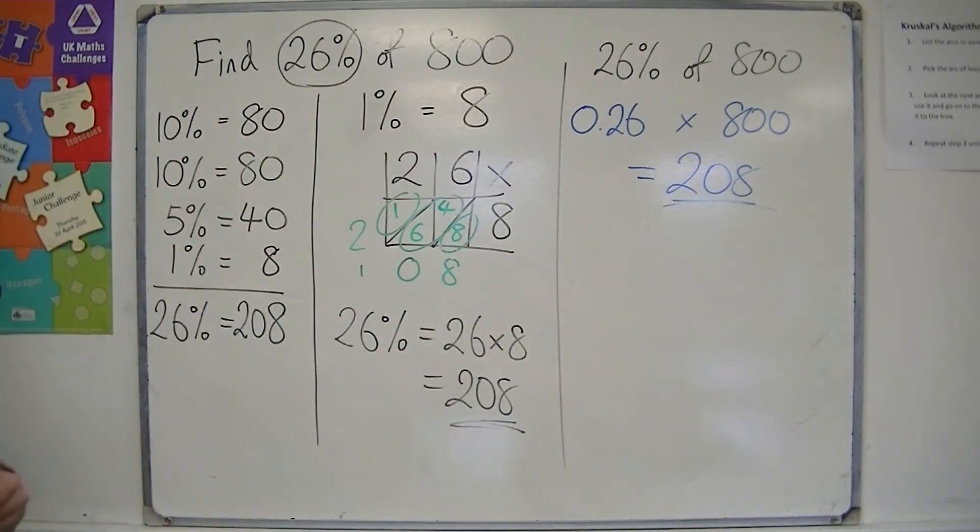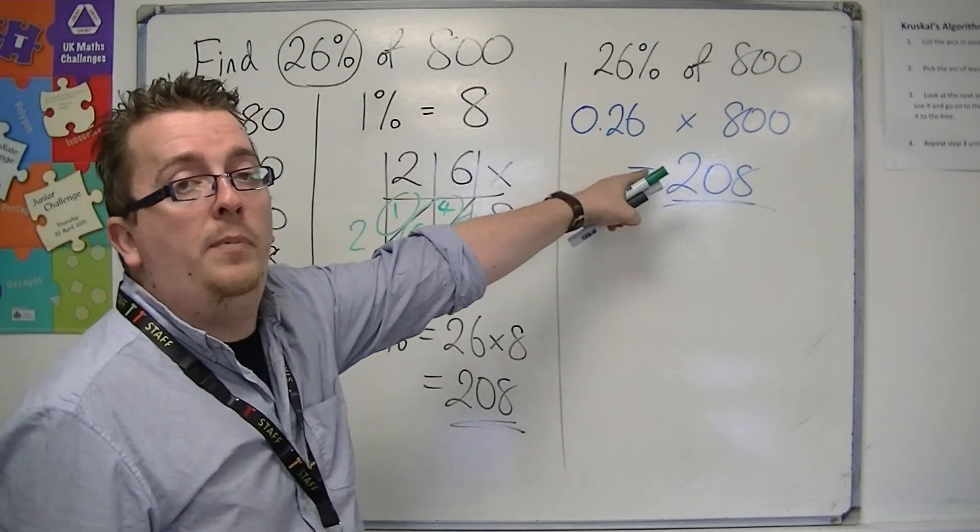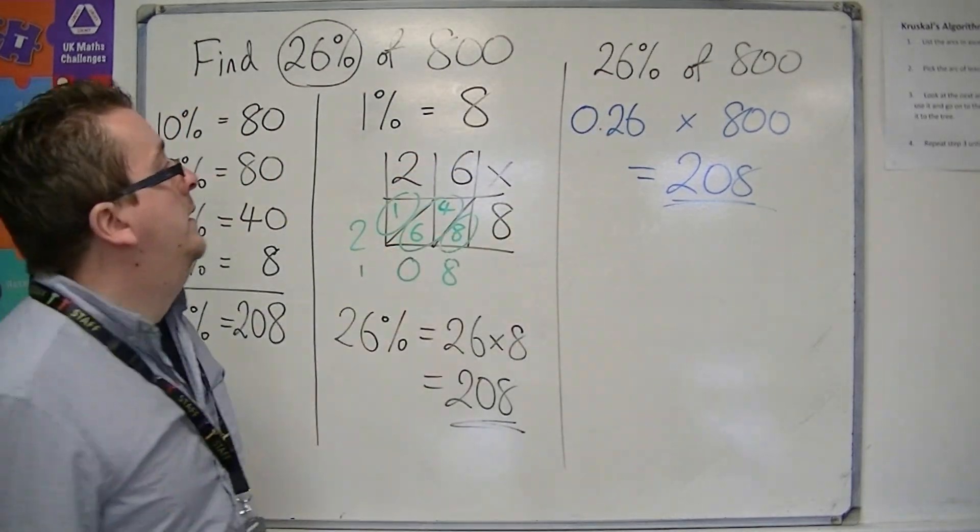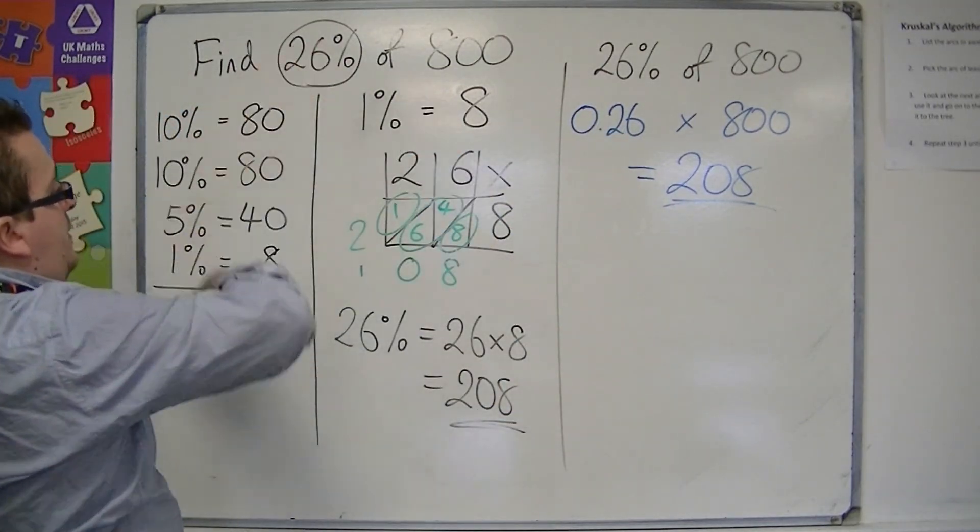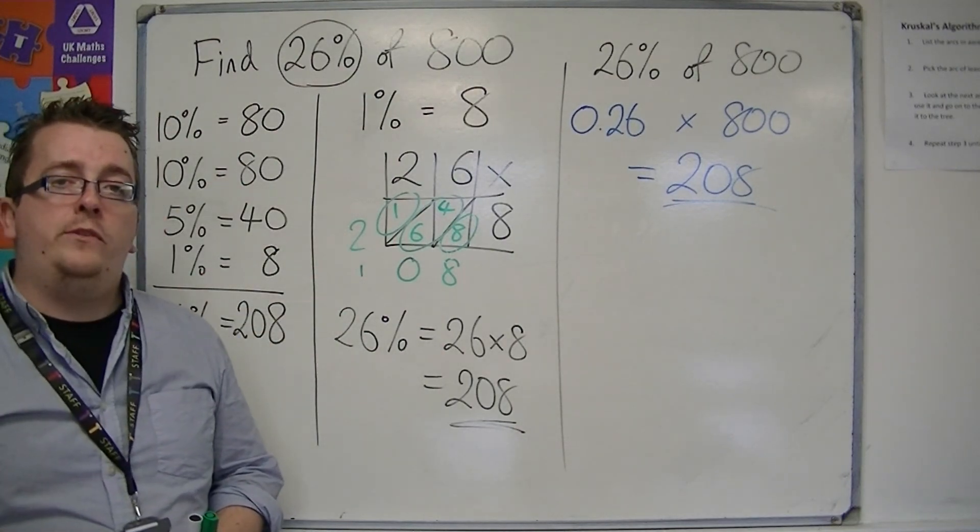So this would be your calculator method. You could do this by hand, but once again, the difficulty increases. And your two hand methods are these. And it's really your choice as to which one you prefer to use.